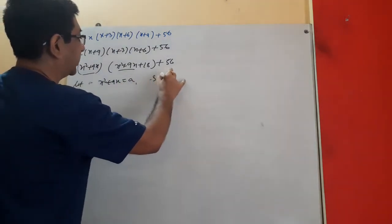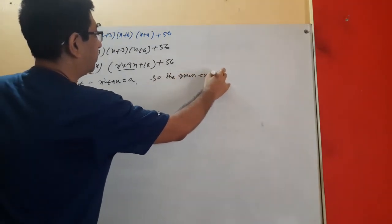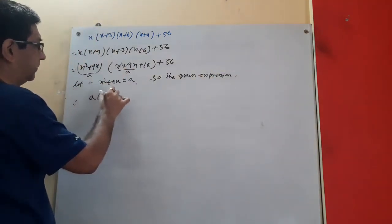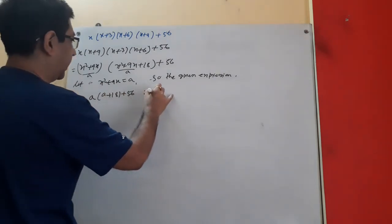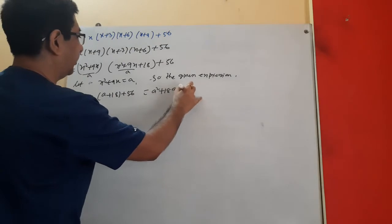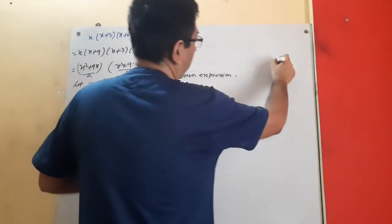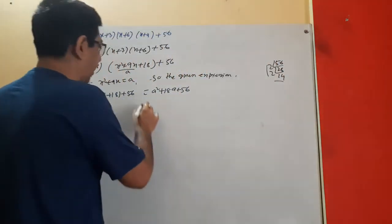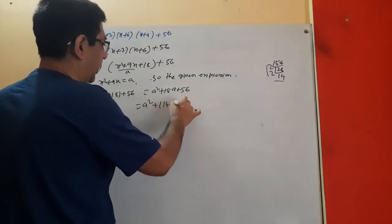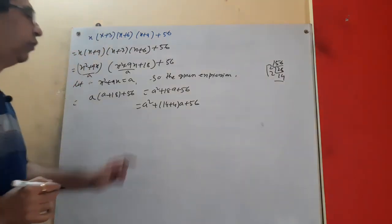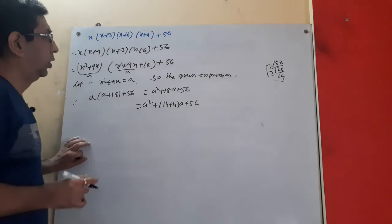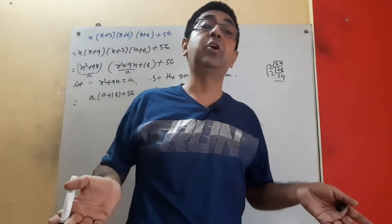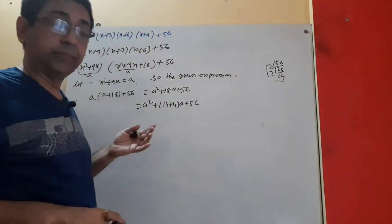Multiplying x(x+9) gives x² + 9x = a, and multiplying (x+3)(x+6) gives x² + 9x + 18 = a + 18. The expression becomes a(a + 18) + 56 = a² + 18a + 56. For factor pairs of 56: 14 × 4 = 56 and 14 + 4 = 18.